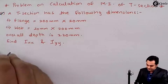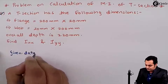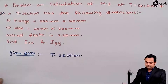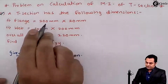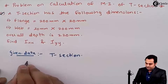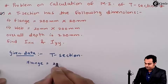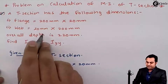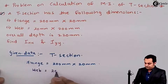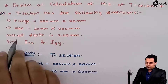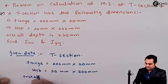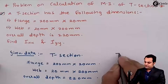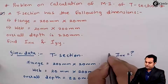For this T-section, the flange has dimensions 200 mm × 20 mm, and the web is 20 mm × 200 mm. The overall depth is 220 mm. We need to find IXX, the moment of inertia about the XX axis, and IYY, the moment of inertia about the YY axis.